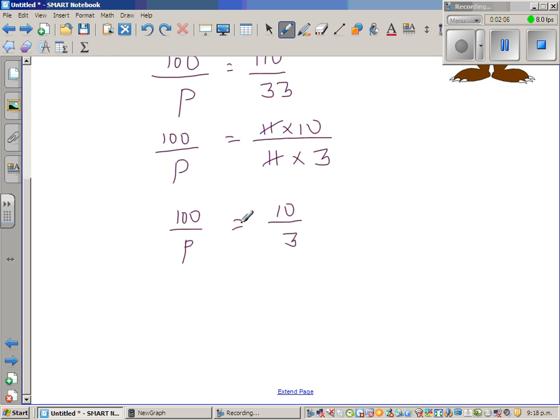Now you can cross multiply. So this and this can be multiplied. This is called cross multiplying, and this and this can be multiplied. So it's like a butterfly hook. So this is 100 times 3 is equal to 10 times P.